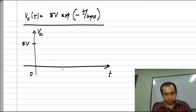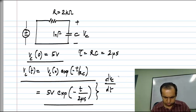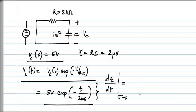And the slope at t equal to zero you can find by differentiating this and setting t equal to zero. So, the slope at t equal to zero will turn out to be minus five volts by two microseconds, or minus two point five times ten to the six volts per second.